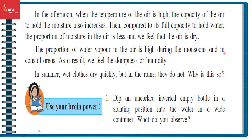The proportion of water vapor in the air is high during the monsoons and in coastal areas. As a result, we feel dampness or humidity. In summer, wet clothes dry quickly, but in the rains they don't.